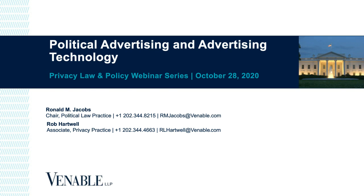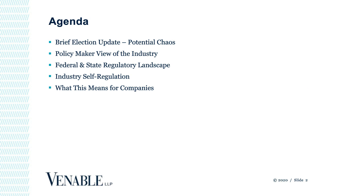We'll start with a brief agenda. Because it's topical with six days to go to the election, we'll cover some potential issues that might arise. We'll go through how policymakers view the ad tech industry and how it intersects with political advertising — how legacy regulators are coming to terms with new ways of using ad tech in political advertising. We'll cover proposed federal regulations, existing state regulations, industry self-regulation with the Digital Advertising Alliance's Political Ads Program, and factors to consider when engaging in political advertising, whether that's accepting political ads, engaging in political advertising, or just thinking about coming into the field.